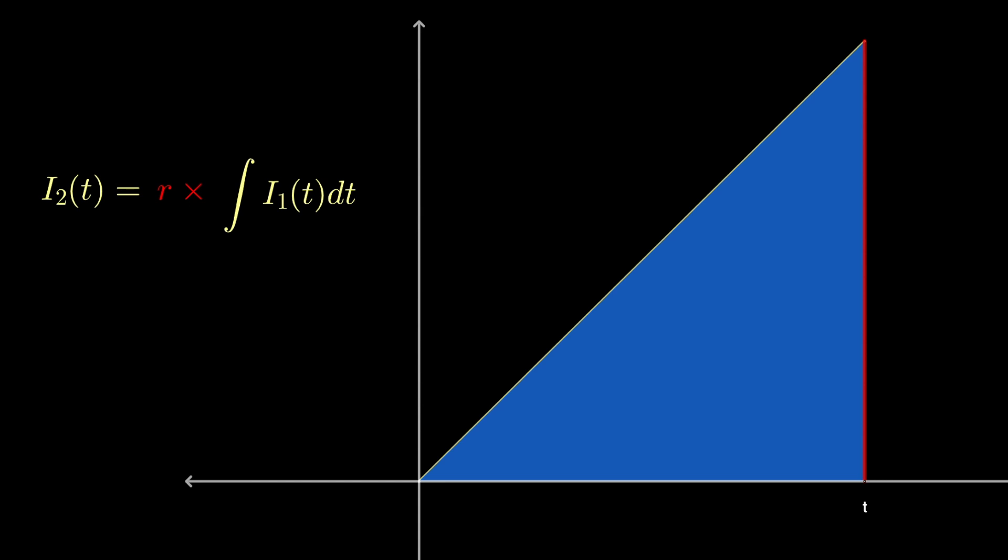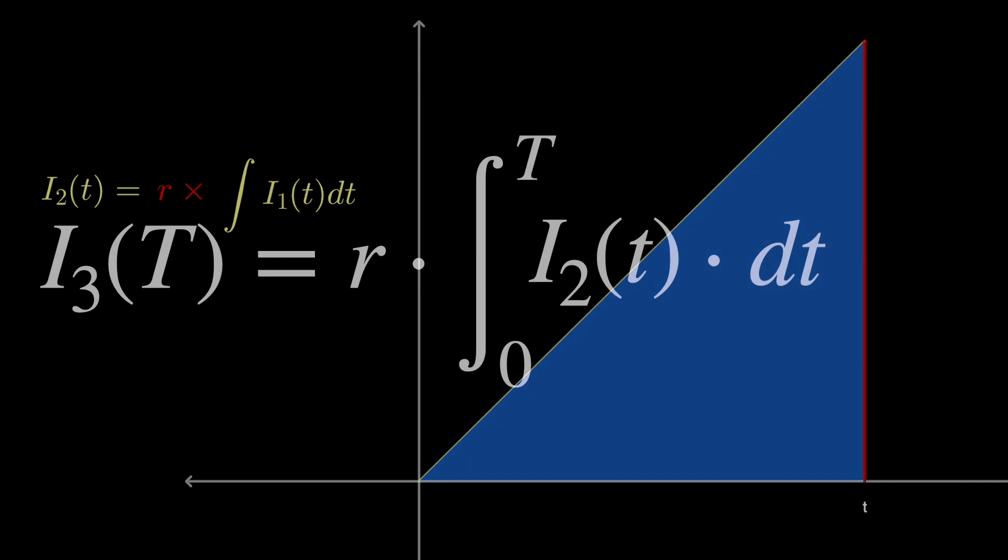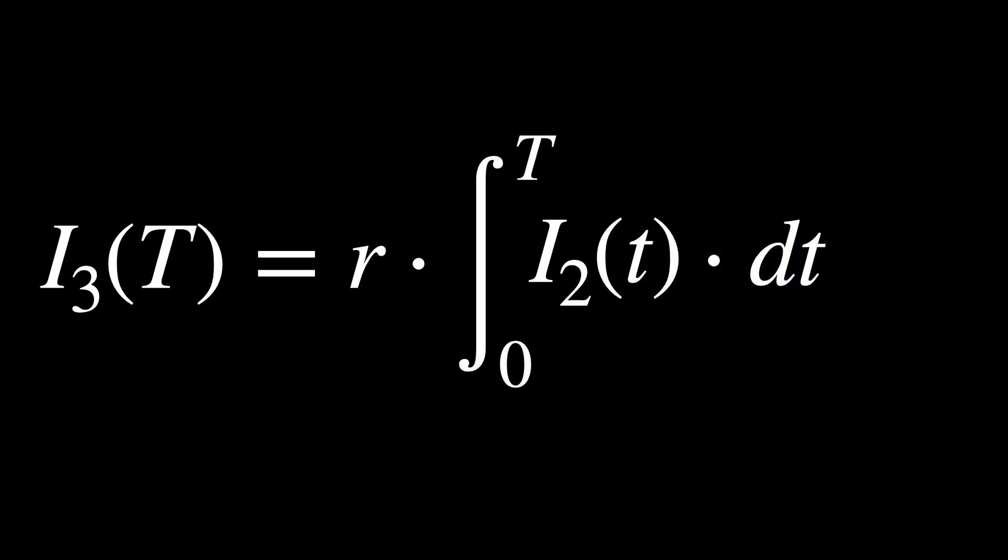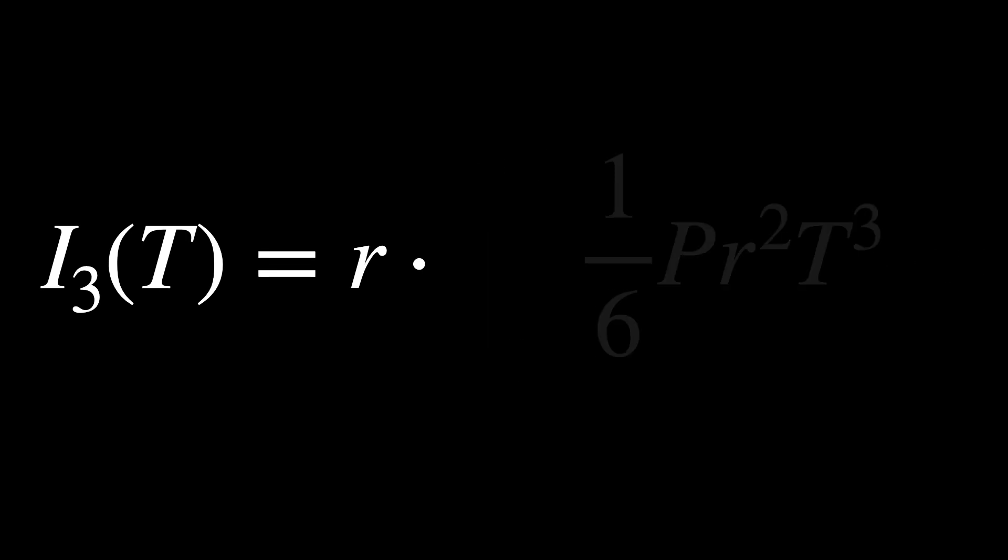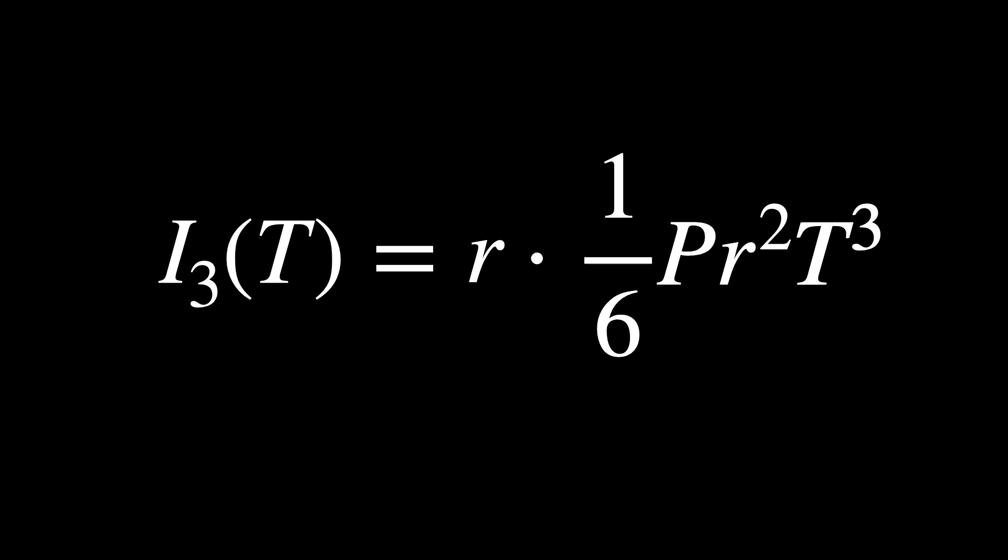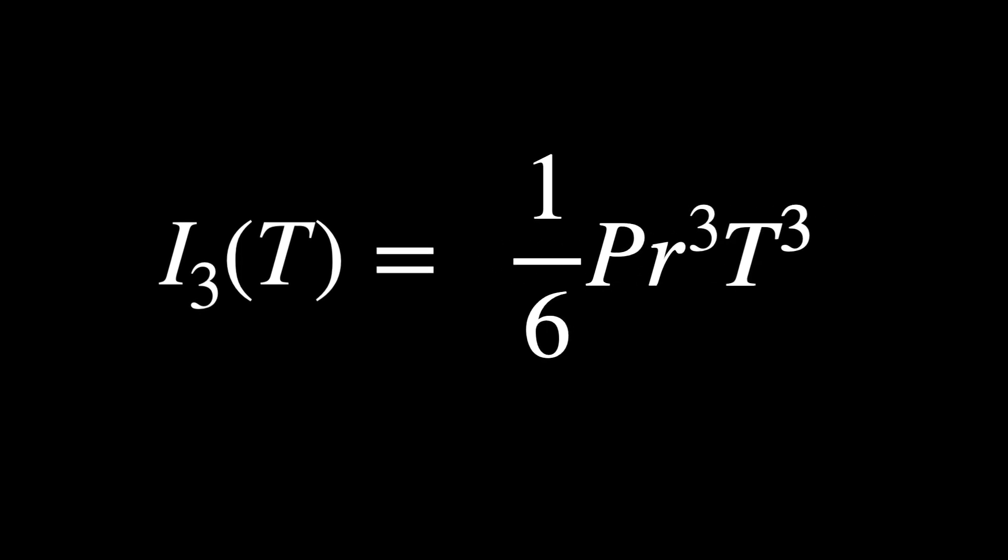So what about the third-degree interest? We repeat the process. We integrate the secondary interest, again using power rule, and multiply by R. This gives I sub 3 is one-sixth PR cubed T cubed, which grows with T to the third power.